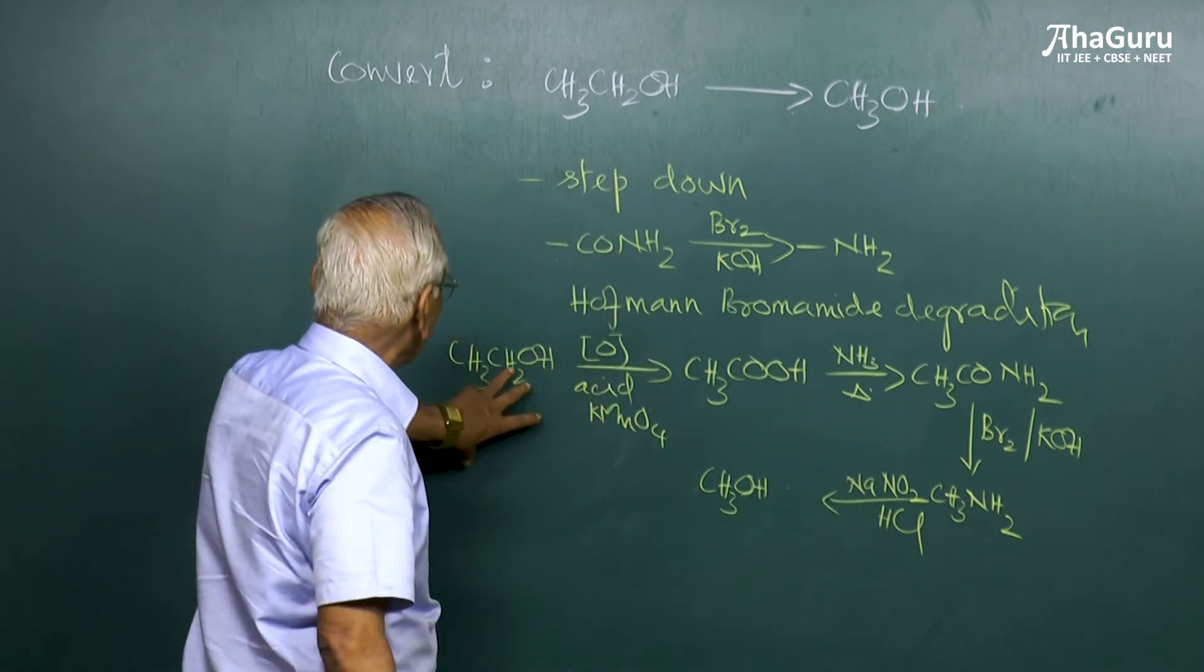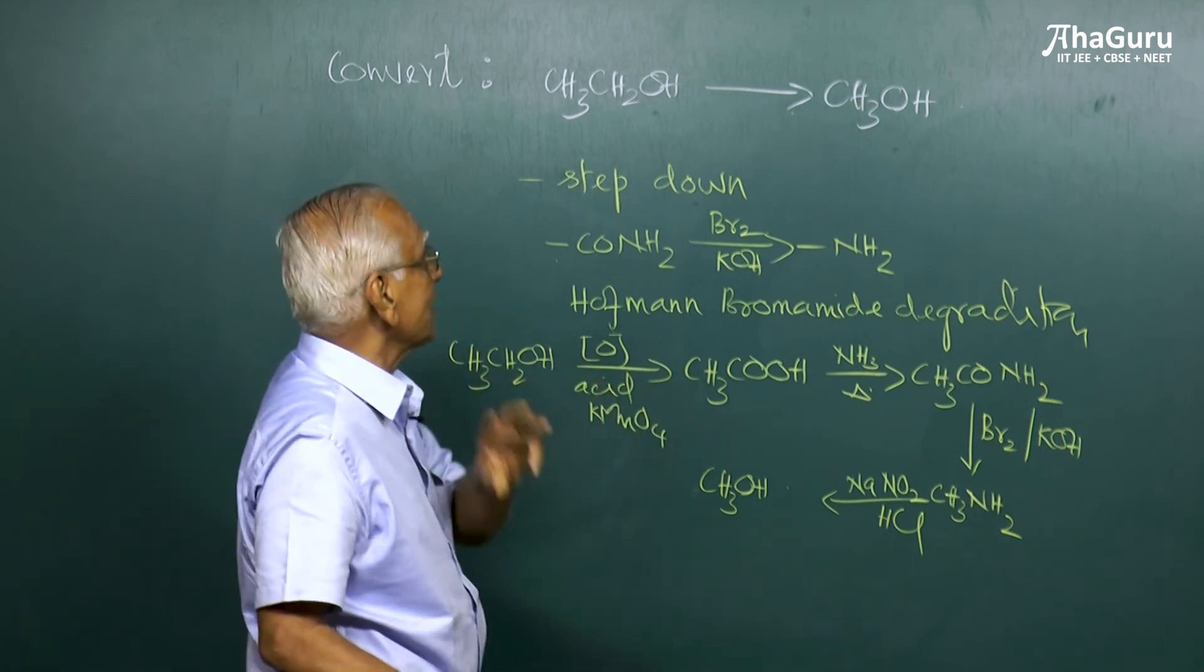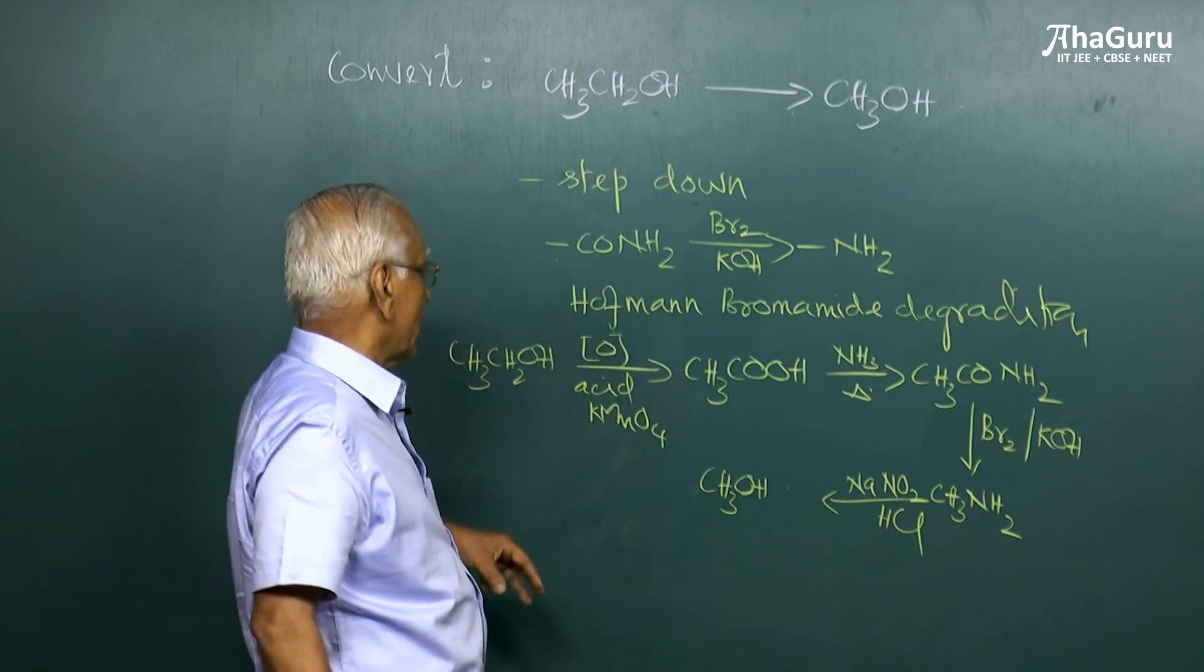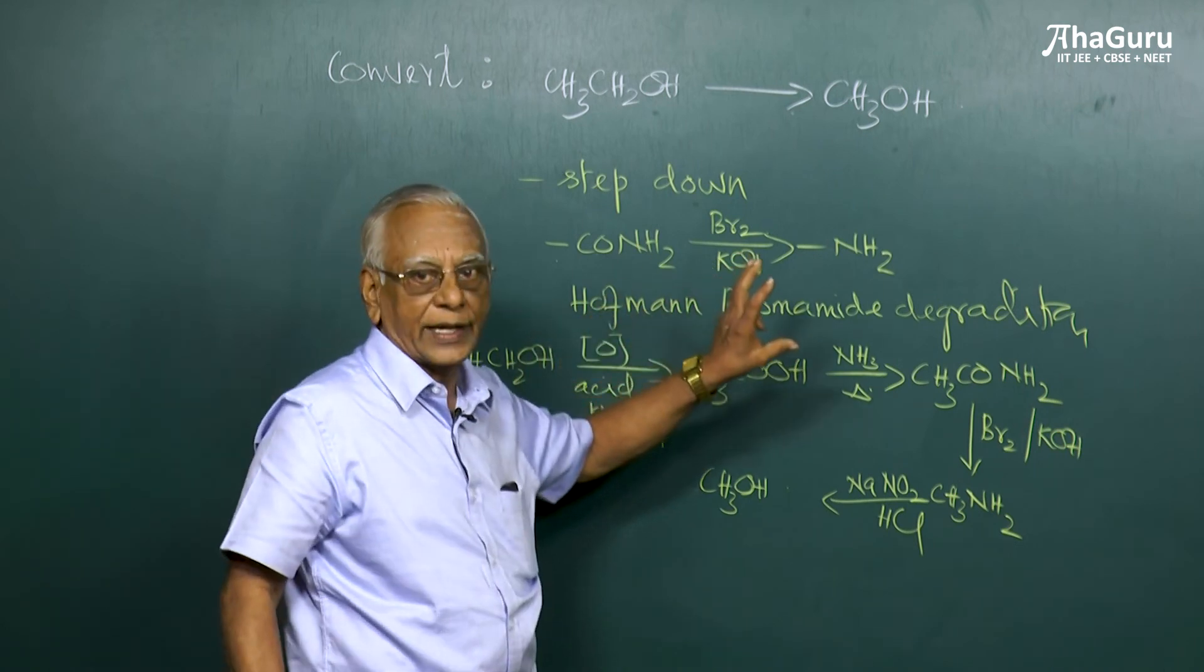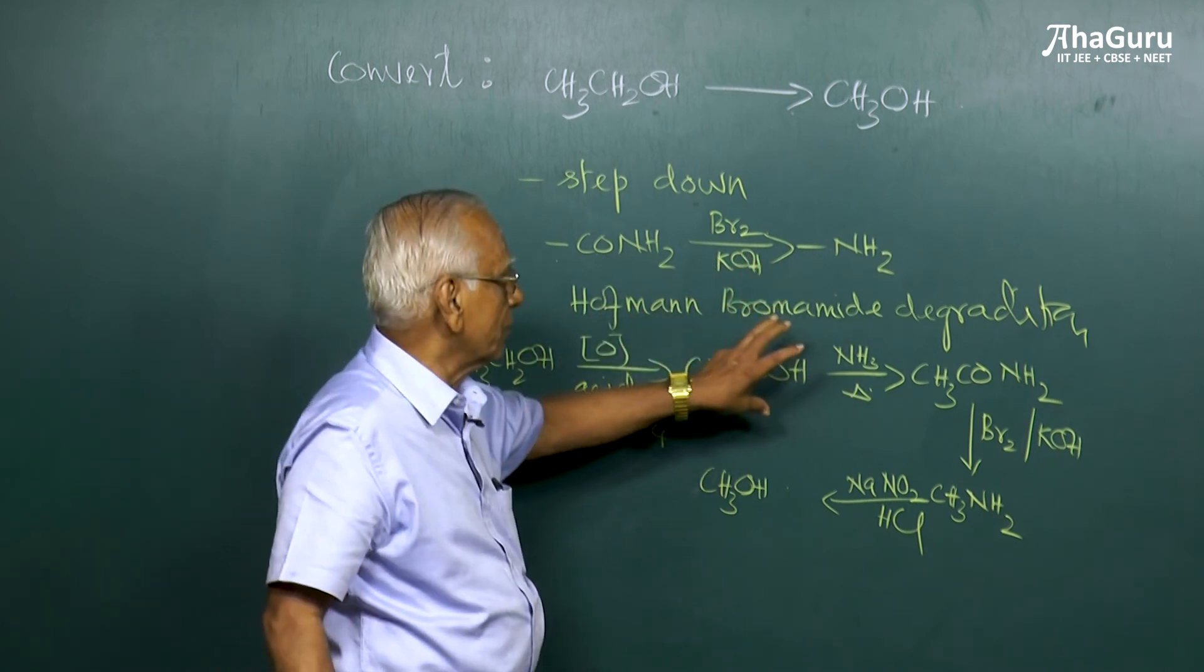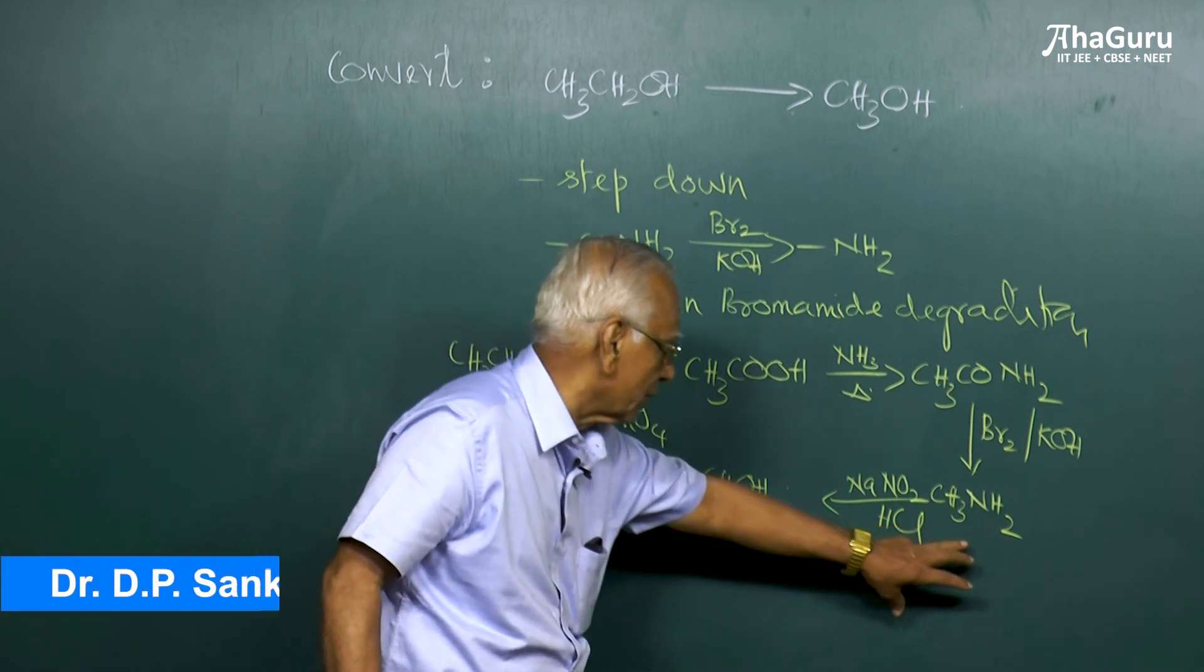So that is how ethanol is converted. Please remember, in a step-down process we have to make use of an amide. Amide on treatment with Hoffman bromamide degradation is converted into amine. In a step-up process we have to use potassium cyanide.